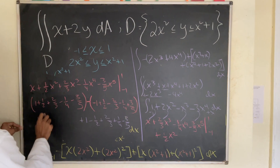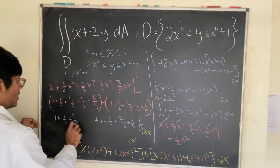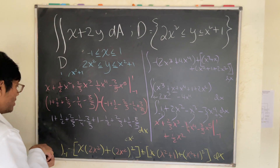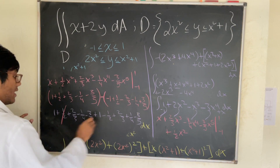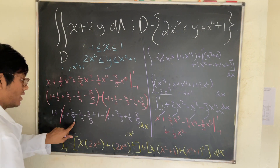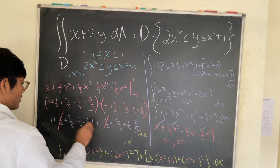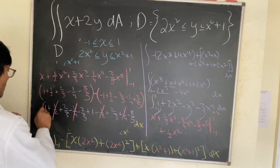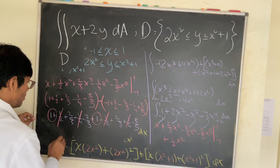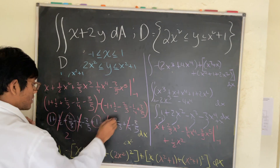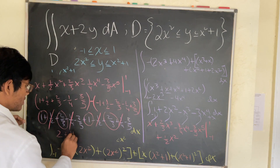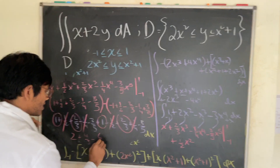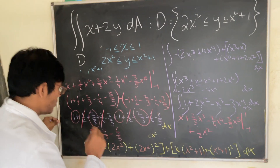Subtracting gives us: 1 plus one-half plus two-thirds minus one-fourth minus three-fifths, minus (negative 1 plus one-half minus two-thirds minus one-fourth plus three-fifths). The halves cancel, the fourths cancel. We're left with: 1 plus 1 equals 2, two-thirds plus two-thirds equals four-thirds, and negative three-fifths minus three-fifths equals negative six-fifths.